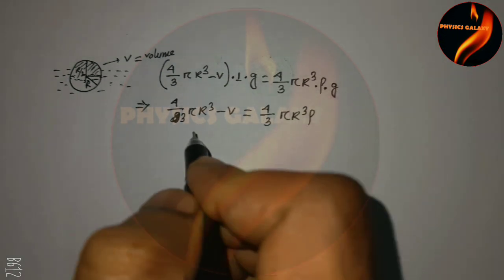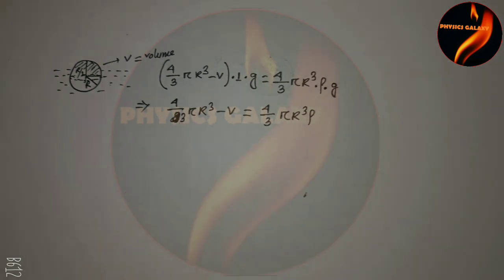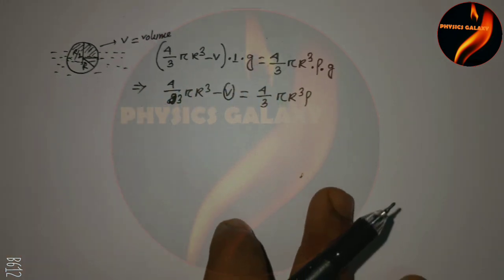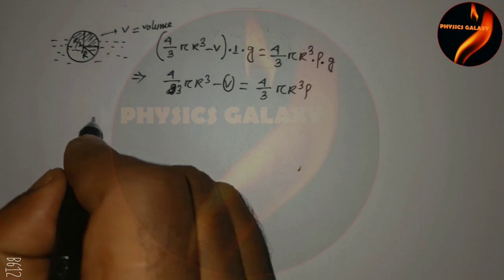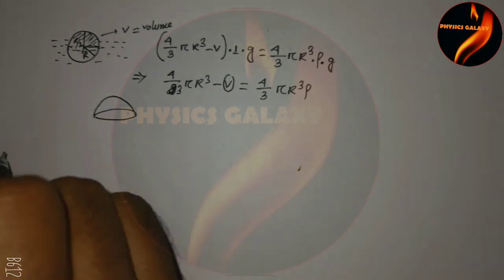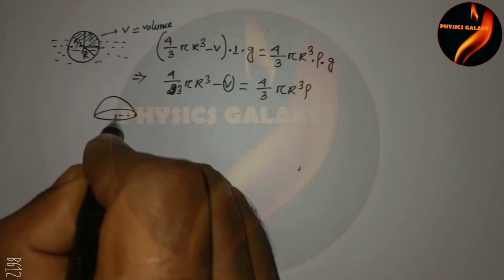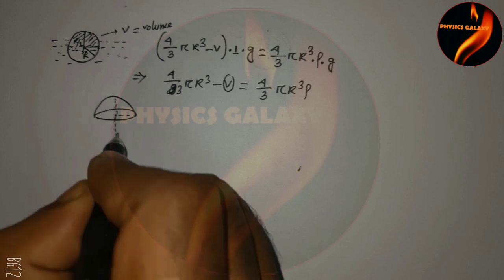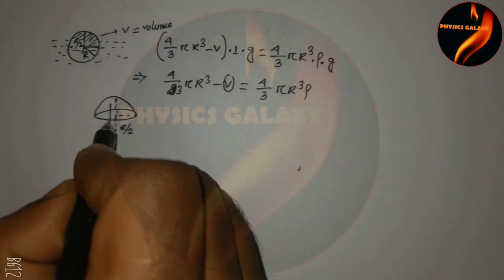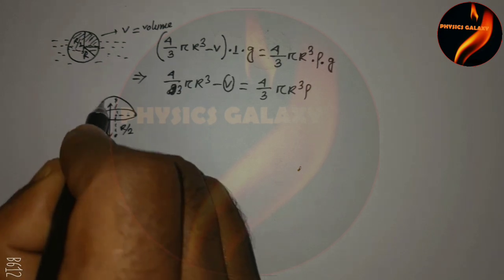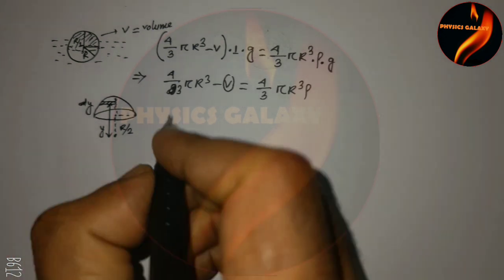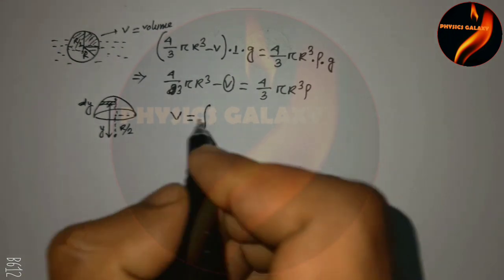Now we calculate the value of V — the volume of the upper portion of the sphere above the water surface. We set up a coordinate system with y measured from the center of the sphere. The water surface corresponds to the point where the sphere meets the water level, and the top is at height R/2 above the surface.